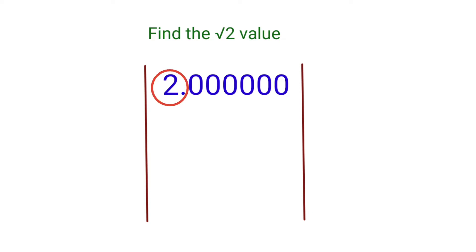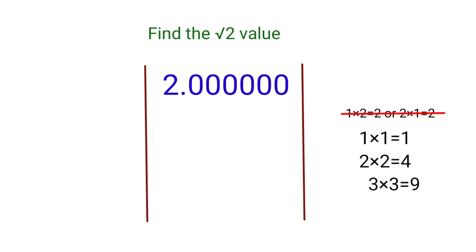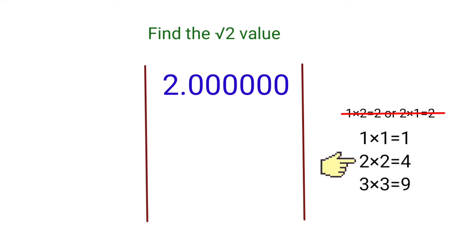First, we take 2 into account. How do we multiply 2 same numbers to get a product less than or equal to 2? You multiply the same number by itself: 1×1=1, 2×2=4, 3×3=9, and so on. Since 1×1=1 is less than 2 and 2×2=4 is greater than 2, we take the number 1.